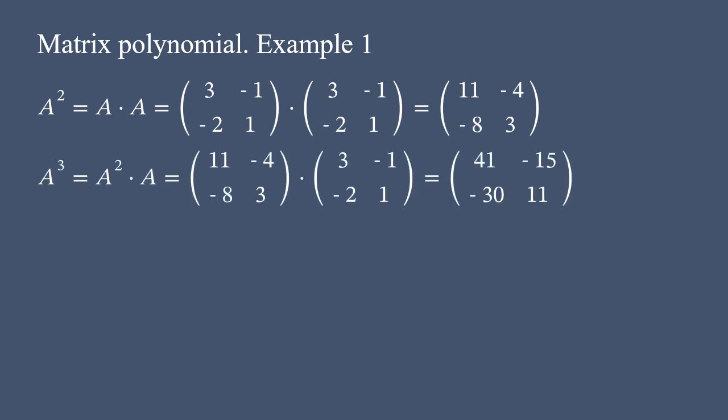Now, let's figure out A cubed matrix, which is A squared matrix times matrix A. That is, we plug the result we got in a previous step and then multiply by A. This results in a matrix with entries 41, negative 15, negative 30, and 11.